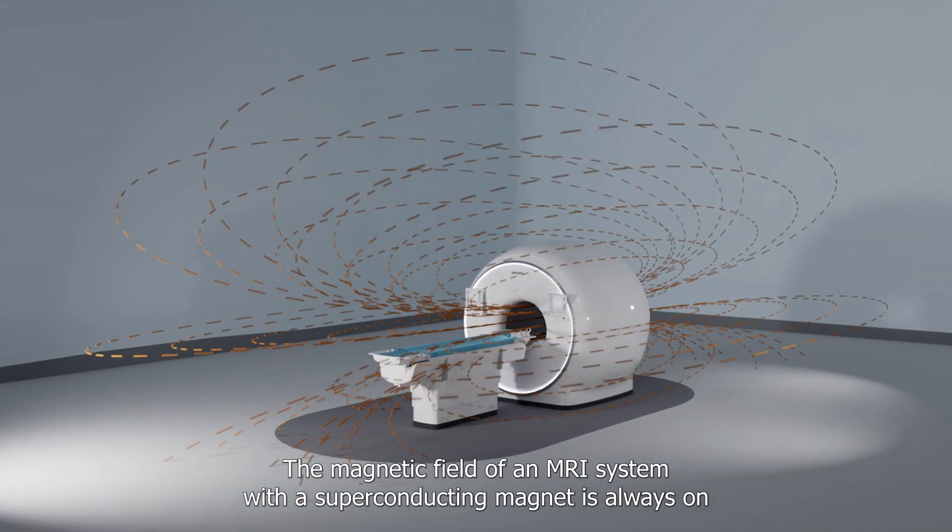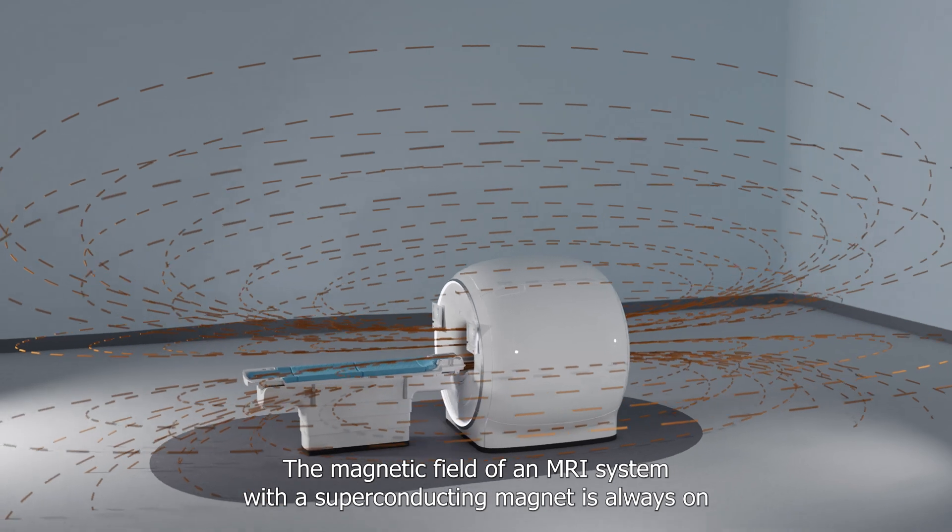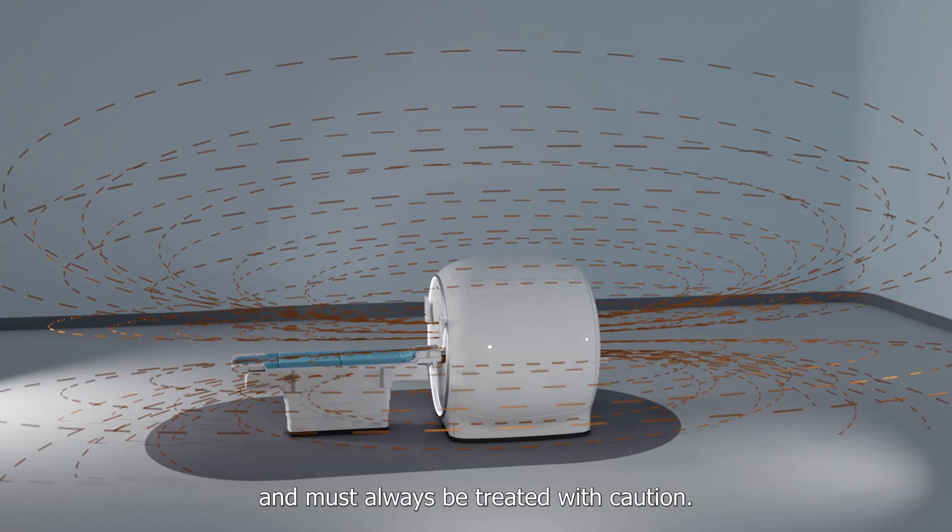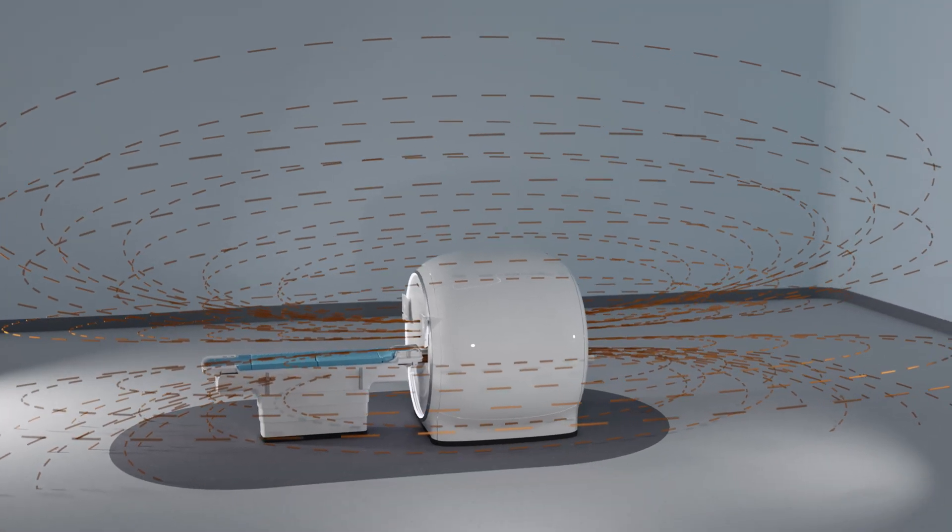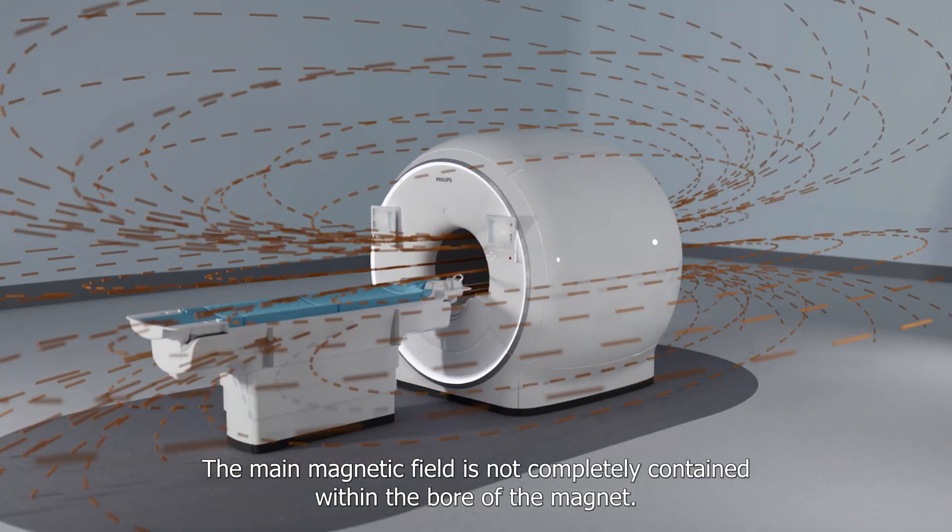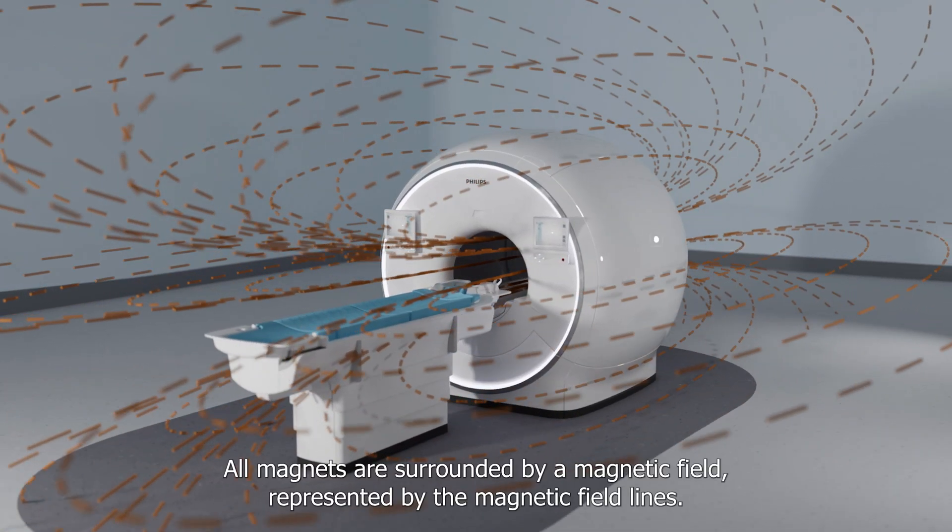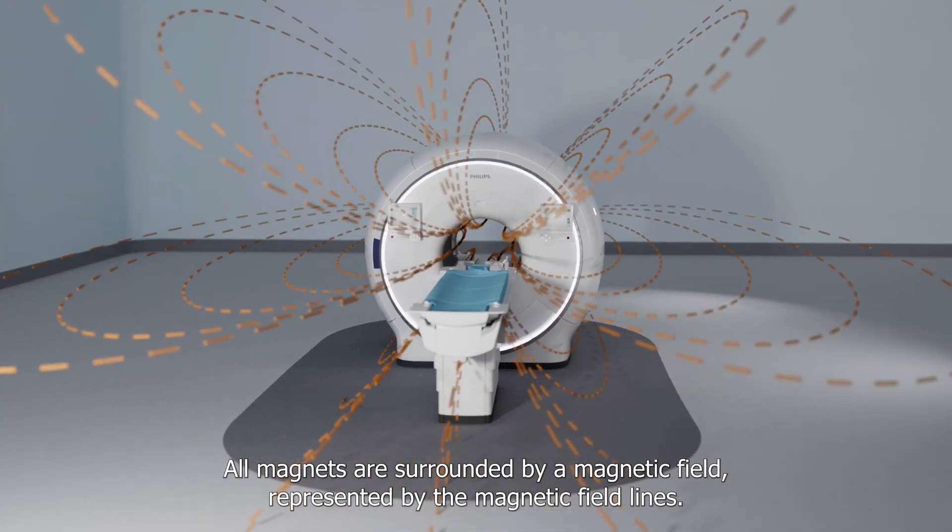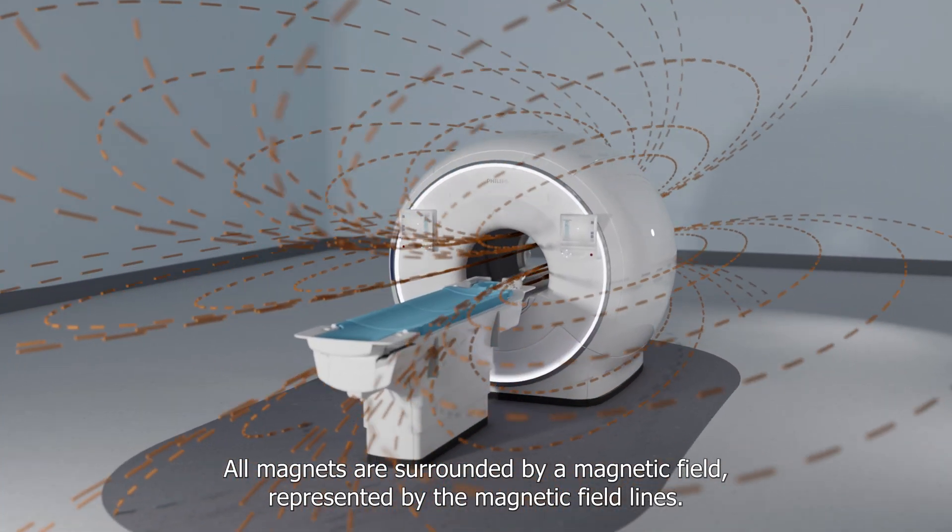The magnetic field of an MRI system with a superconducting magnet is always on and must always be treated with caution. The main magnetic field is not completely contained within the bore of the magnet. All magnets are surrounded by a magnetic field, represented by the magnetic field lines.